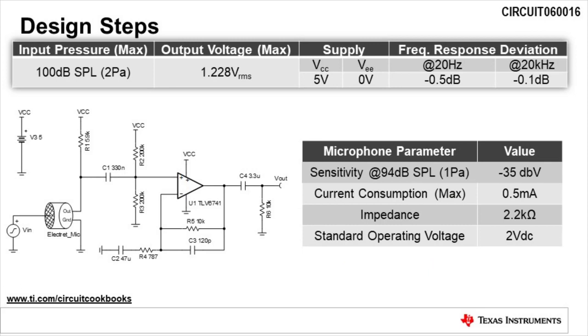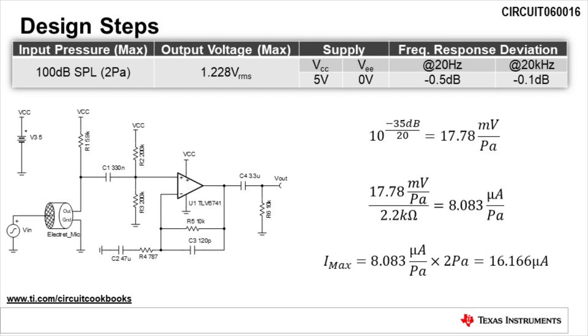The first design step is to convert the sensitivity of the microphone to an output current. We will use the information about the microphone parameters to make this conversion. To convert the sensitivity of the microphone to an output current, the first step is to convert the sensitivity to volts per Pascal. This is done by taking 10 raised to the sensitivity, which is negative 35 dB divided by 20. Using this equation, we get 17.78 millivolts per Pascal.